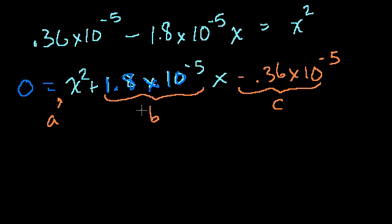So you get minus b. So you minus 1.8 times 10 to the minus 5 power. Plus or minus? We'll only have to do the plus. Because if we do the minus, we'll end up with a negative concentration. So plus the square root.